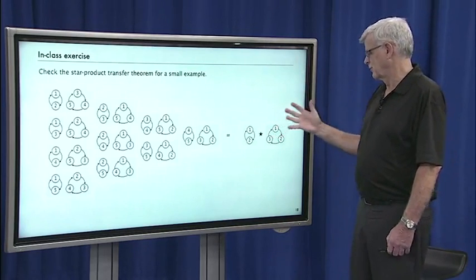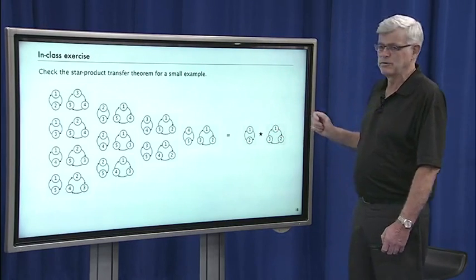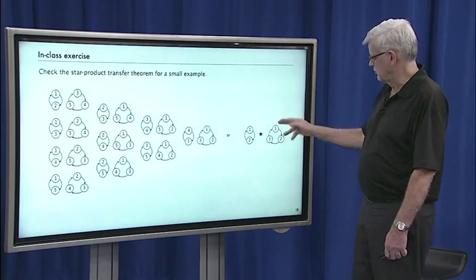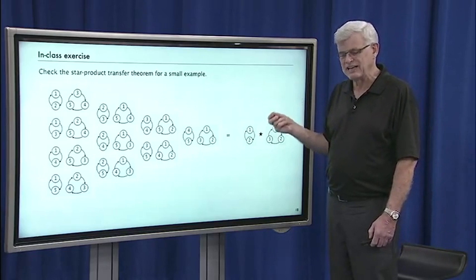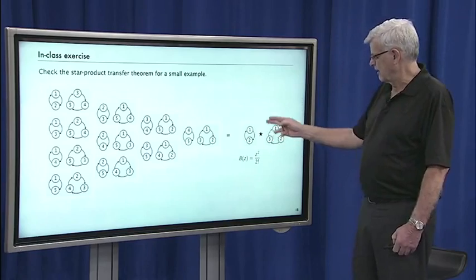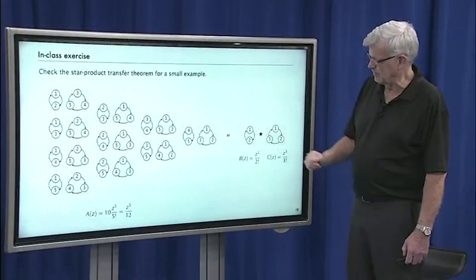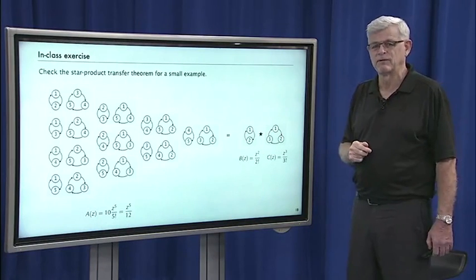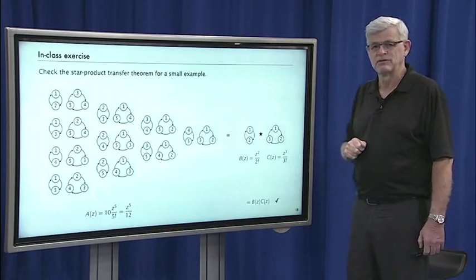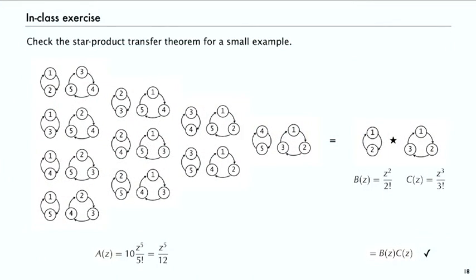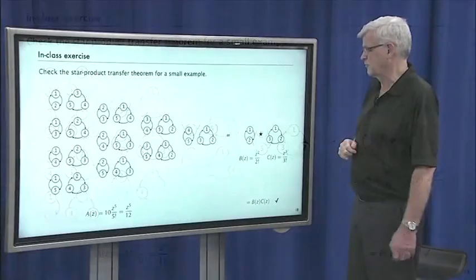As an exercise, it's wise to look at the star product transfer theorem for the small example I showed before — where {1,2} times {1,2,3} equals those ten objects. The exponential generating function for {1,2} is z² over 2 factorial, and for {1,2,3} it's z³ over 3 factorial. The EGF for the result has ten objects of size five, so it's 10·z⁵ over 5 factorial, which equals z⁵ over 12. And that is exactly B(z) times C(z), as the transfer theorem says.